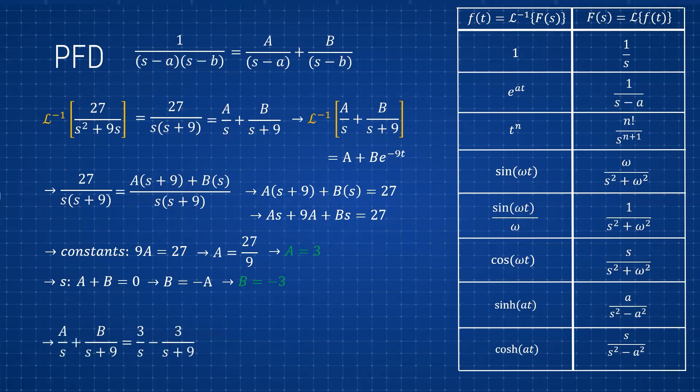Plugging in, A over s plus B over (s+9) becomes 3/s minus 3/(s+9). Taking the inverse Laplace and factoring out the constants, we get 1/s and 1/(s+9) from the table, giving us a final answer of 3 minus 3e^(-9t). PFD is really useful for breaking down terms to make them easier to find in the table.